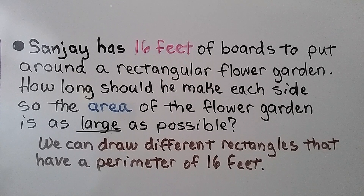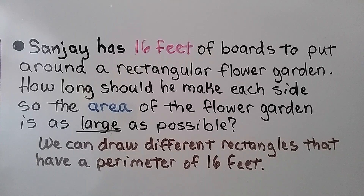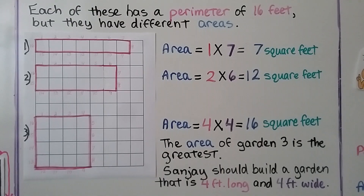Sanjay has 16 feet of boards to put around a rectangular flower garden. How long should he make each side so the area of the flower garden is as large as possible? We can draw different rectangles that have a perimeter of 16 feet. Each of these has a perimeter of 16 feet, but they have different areas.